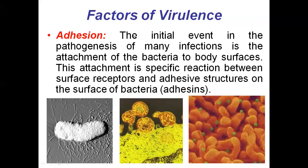Now we will see about the factors of virulence — that means the factors which are responsible for the pathogenicity of microorganisms. One of those factors is called adhesion. This is the initial event in the pathogenesis process, that is, in the mechanism of disease causing in different types of infections. Adhesion is nothing but the attachment of that bacteria or pathogen to the body surface.